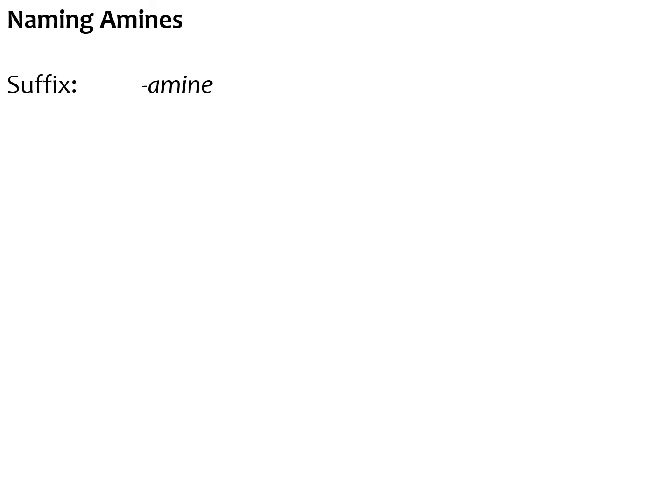As with all topics for organic chemistry, there is some IUPAC nomenclature that you have to be aware of, so we're going to have a look at naming amines. The suffix that goes at the end of a word for amines is 'amine'. Most often that's what we'd be using. But we might also need a prefix, which for amines would be 'amino'. We're going to have a look at a few examples of naming.